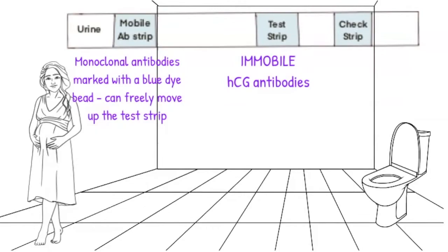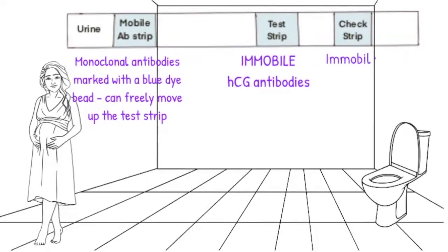Then there are more monoclonal antibodies at the check strip. These monoclonal antibodies are again fixed in place, and are monoclonal antibodies which are specific to the antibody for HCG.